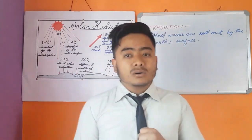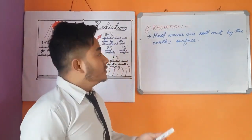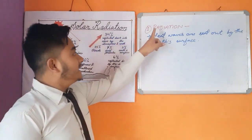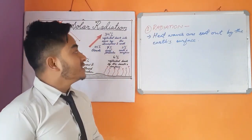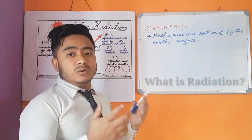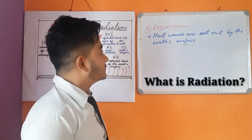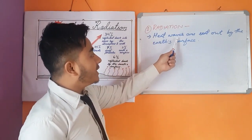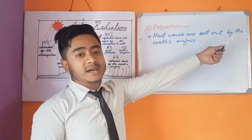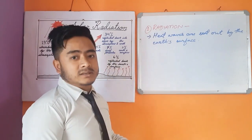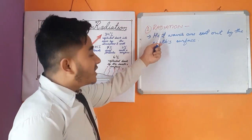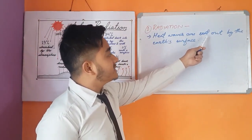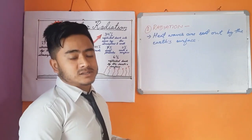Now we will learn about the first process of heating of the Earth's atmosphere: radiation. Radiation is the process by which heat waves are sent out by the Earth's surface.